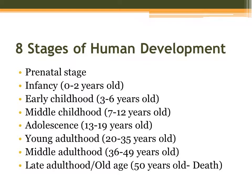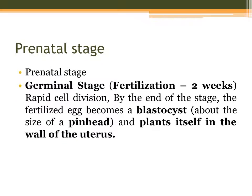The prenatal stage consists of three phases. First, we have the germinal stage, which happens from fertilization until two weeks. Here there is rapid cell division, and by the end of the stage the fertilized egg becomes a blastocyst — about the size of a pinhead.